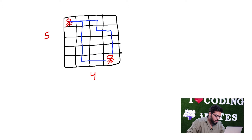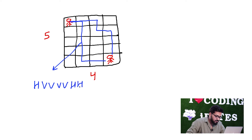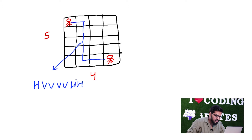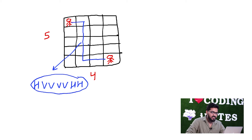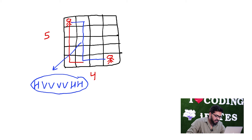If I talk about this particular path, what he has to do is: he has to move once horizontal, then vertical 4 times, then 2 times horizontal. So: horizontal, vertical, vertical, vertical, vertical, horizontal, horizontal — that is the path for this. Similarly, there can be many paths. Another path can be: vertical 4 times and then 3 times horizontal.